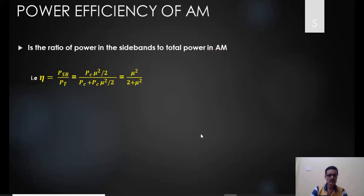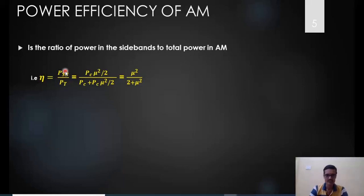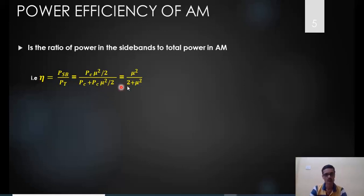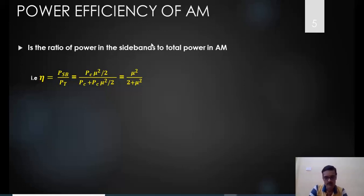Power efficiency in AM is defined as the ratio of sideband power to total power, since only the sidebands carry useful information. The efficiency formula is η = PSB / PT = (PC·μ²/2) / (PC(1 + μ²/2)). Cancelling PC gives η = (μ²/2) / (1 + μ²/2), which simplifies to η = μ² / (2 + μ²).